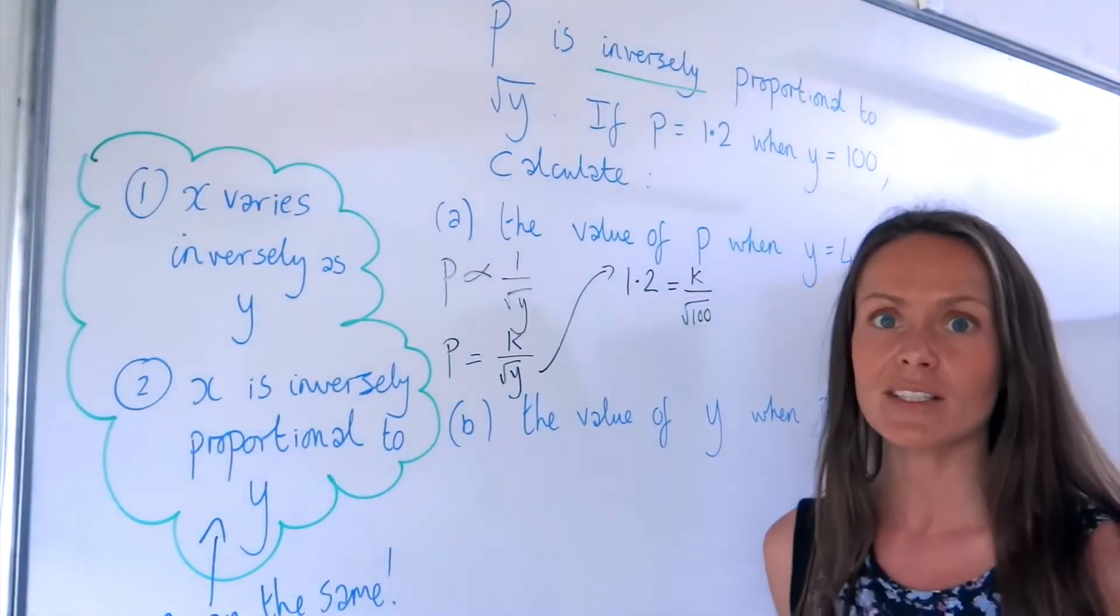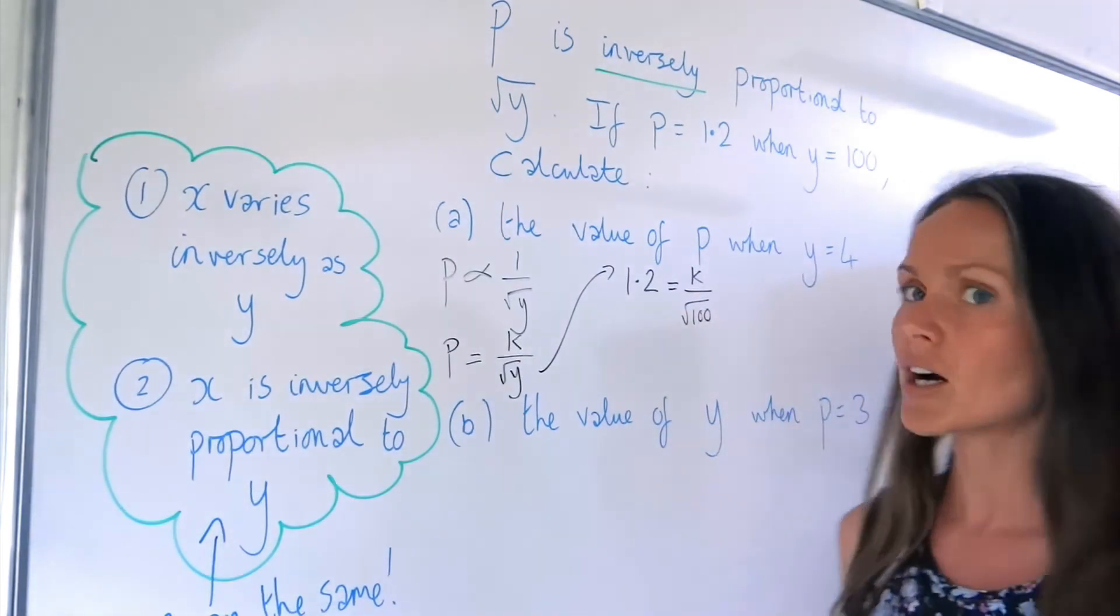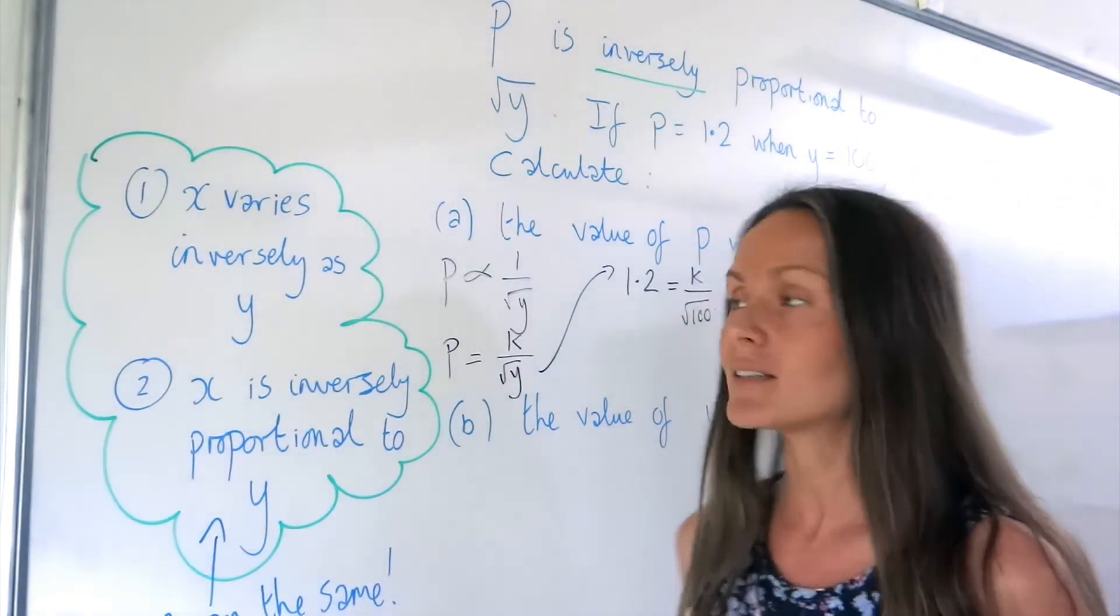So now I need to solve this equation to find K. Well, the square root of 100 is 10, because 10 squared is 100. So that can be written as K over 10.